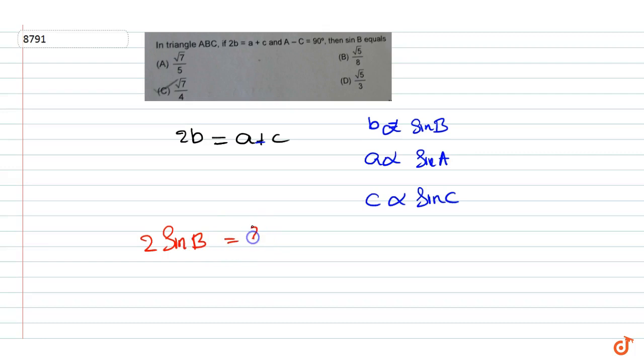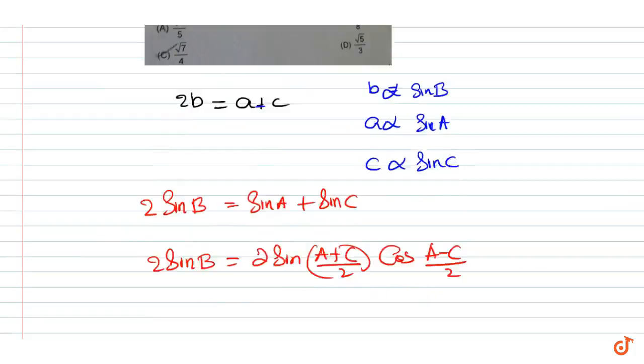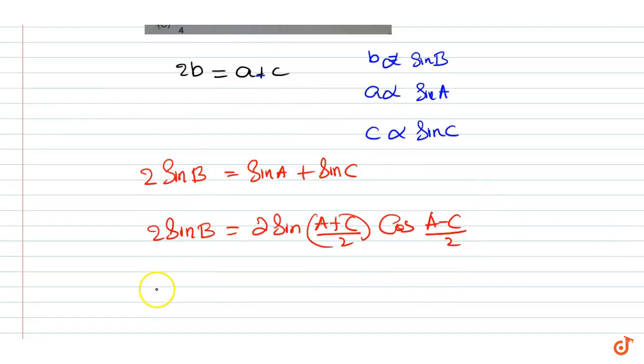We can write sine b is equal to 2 sine of (a plus c) by 2 times cos of (a minus c) by 2. Or we can write 2 sine b is equal to 2 times sine of (a plus c) by 2.